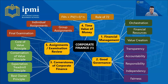Number three is the cornerstones of corporate finance, which consists of the core of value principle, conservation of value principle, expectation treadmill principle, and best owner principle. Number four is time value of money — there is a rule of 72, a rule that can measure how long it takes to double your investment, along with the relevant equation.